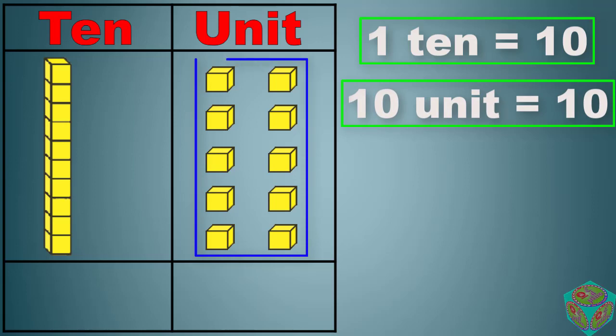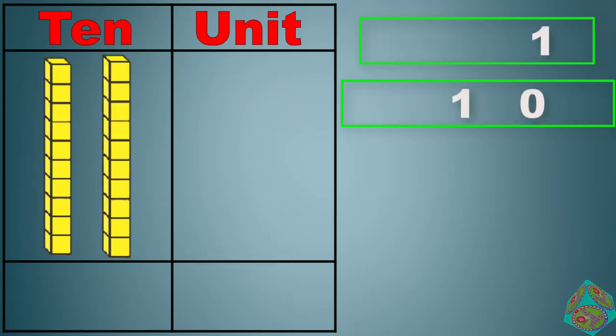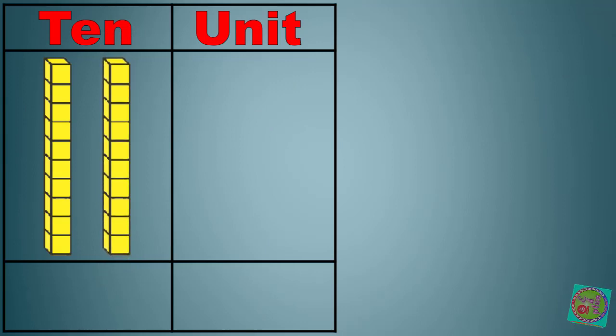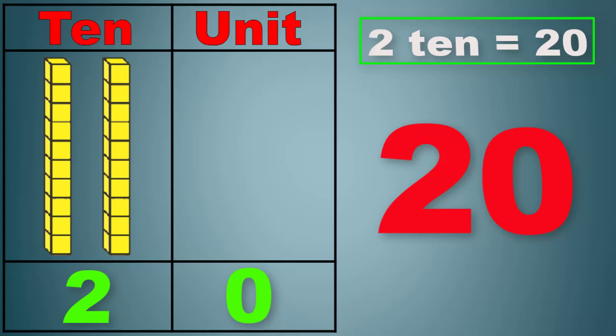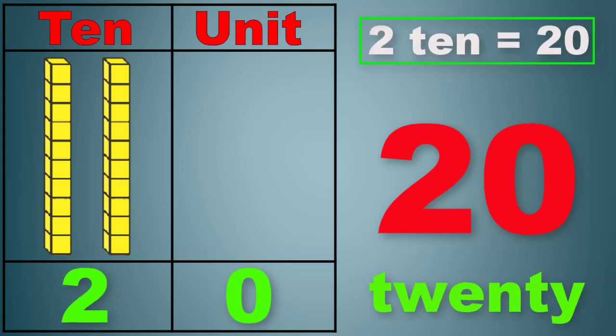With the help of these 10 units, we got another 1 ten. Now we have 2 tens, zero unit. 20! T-W-E-N-T-Y, 20, 2 tens 0 unit, 20.